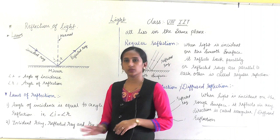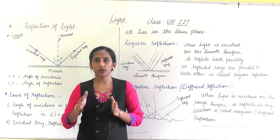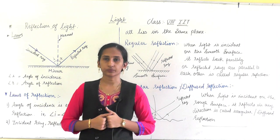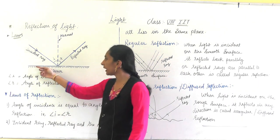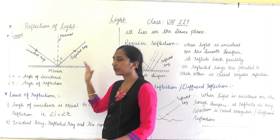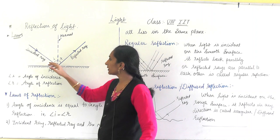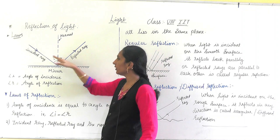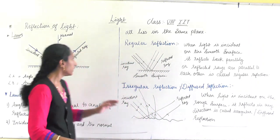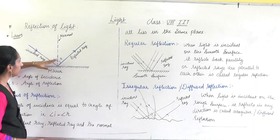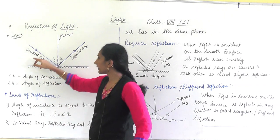Today's topic was very important. Read it properly and also refer to your textbook. In the textbook, there is a small experiment with a table having columns for angle of incidence and angle of reflection. You will need to draw the diagram using a set square from your compass box to draw the normal perpendicular to the surface.